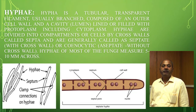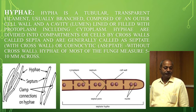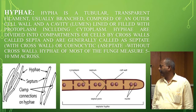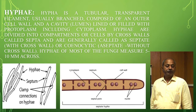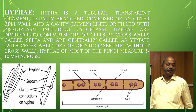The hyphae are divided into compartments or cells by cross walls called septa. Septa divide the hypha into various compartments and are generally found in septate fungi. In coenocytic hyphae, the hypha is without cross walls. Most fungi measure 5 to 10 microns in diameter. Coenocytic hyphae are found in Zygomycotina and Oomycota, while septate hyphae are found in Basidiomycotina, Ascomycotina, etc.